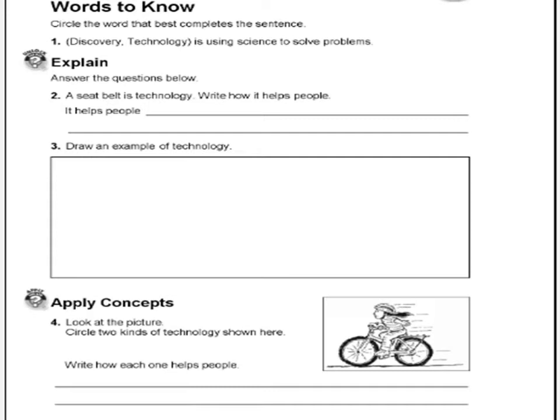Words to know. Circle the word that best completes the sentence: discovery or technology — technology is using science to solve problems. What do you think? Very good! Technology is using science to solve problems.